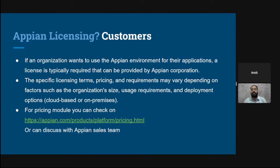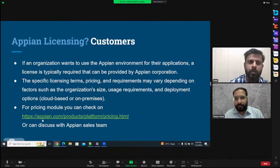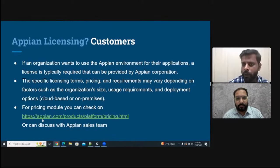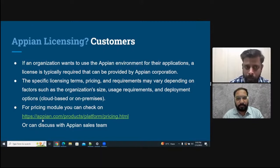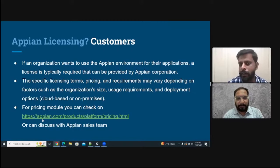Now, Appian licensing for customers. If an organization wants to use the Appian environment for their application, a license is typically required. This license is for Appian customers, not for developers or Appian partners. It is provided by Appian Corporation. If a customer wants an environment, they can request it from the Appian sales team, discuss their project, and get access. Licensing terms, pricing, and requirements vary depending on organization size, usage, and deployment options.